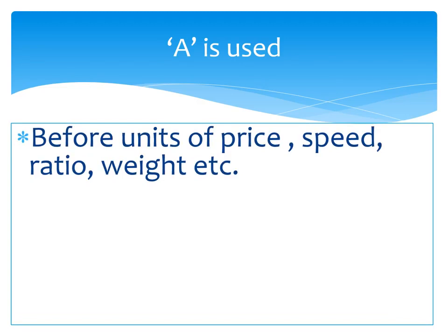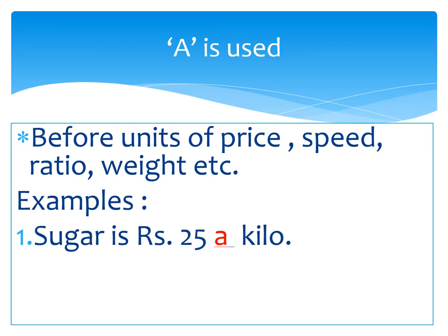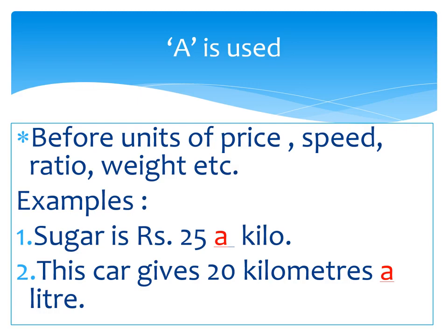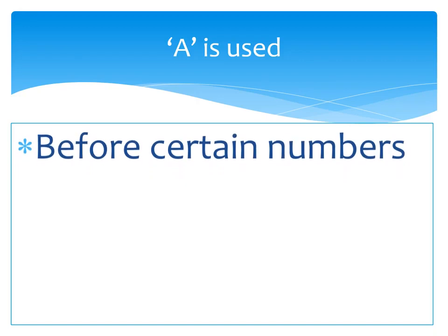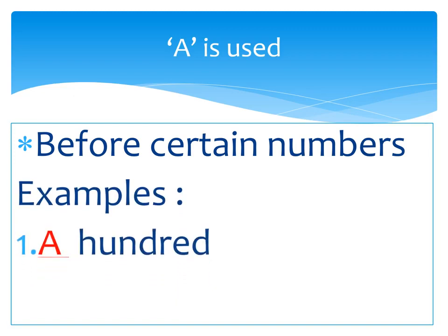Fifth use: before units of price, speed, ratio, weight, etc. For example, 'sugar is rupees 25 a kilo' and 'this car gives 20 kilometres a litre.' Sixth use: before certain numbers — for example, a hundred, a billion, a million, a trillion. A is used with such certain numbers.